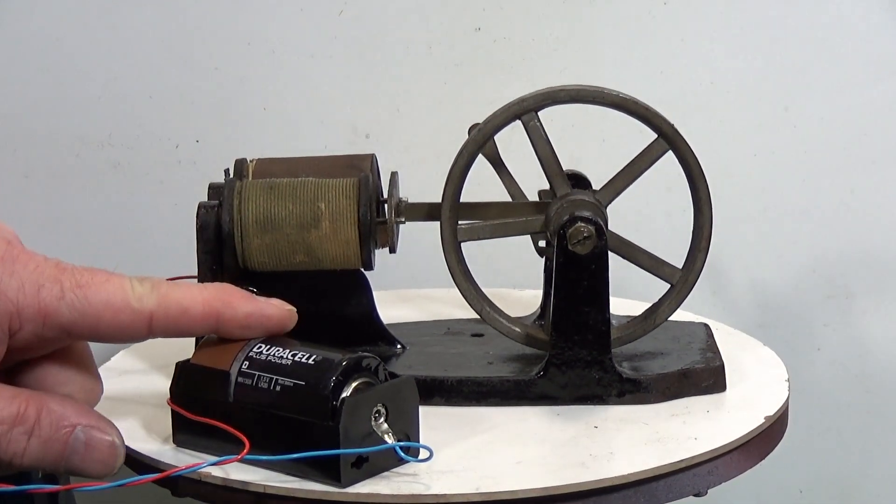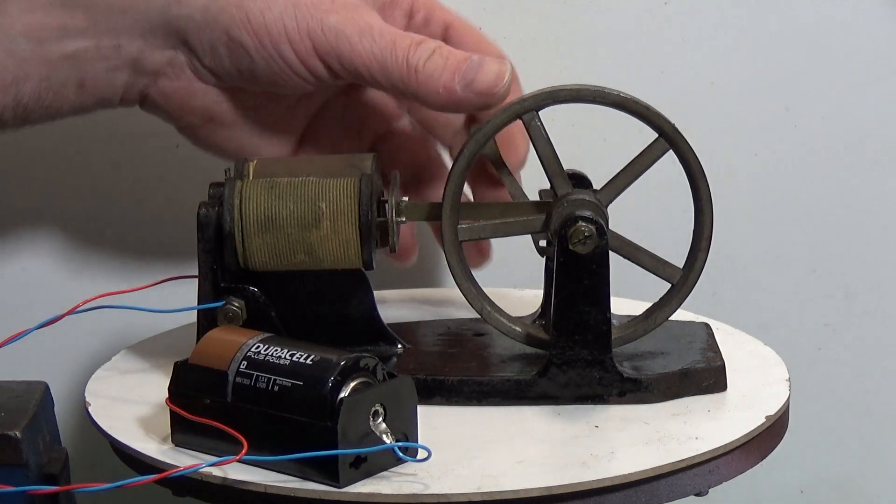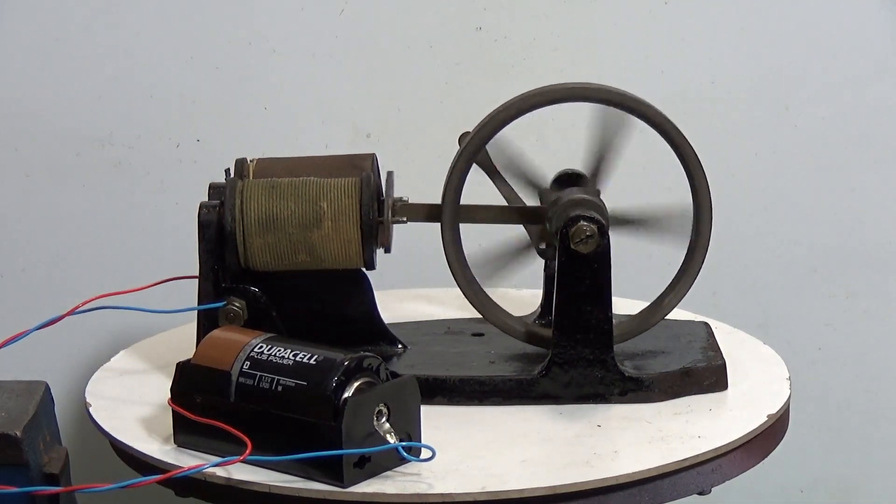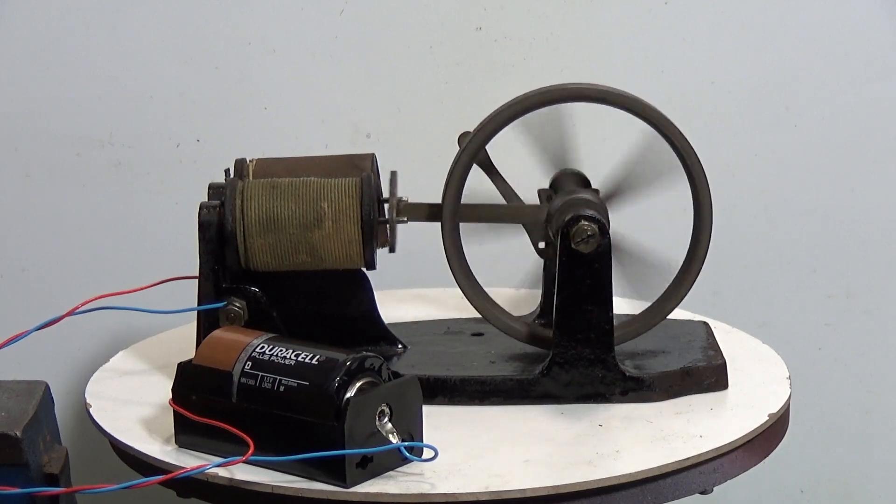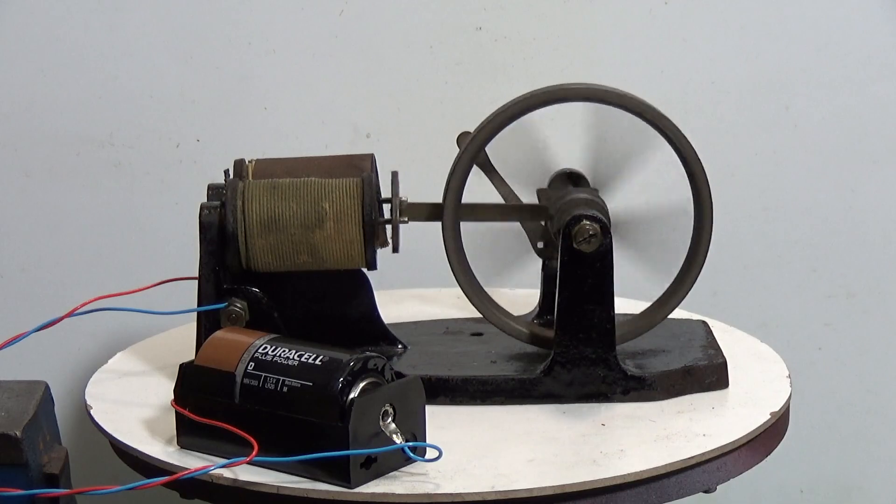OK, got it connected up to a D cell. These things don't generally require a lot of voltage so this should be good to go. So the lever here just allows you to change direction and there she goes. Runs a treat.